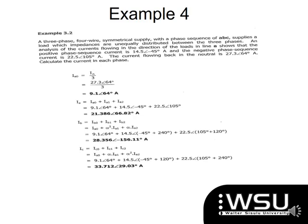Then we have example 4. In this example, you've got a three-phase four-wire symmetrical supply with a phase sequence of ABC. It supplies a load which impedances are unequally distributed between your three phases. An analysis of the current flowing in the direction of the loads in line A shows that your positive phase sequence current is 14.5 at minus 45 degrees, and the negative phase sequence current is 22.5 at 105. So remember, the one was I1, the other one is I2. And then it says the current flowing back to your neutral is 27.3.